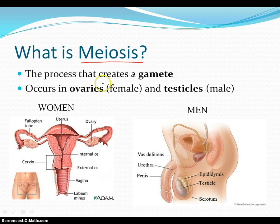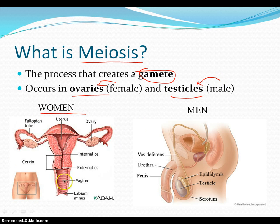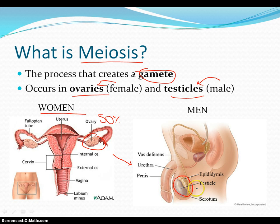So what is meiosis? Meiosis, simply put, is the process that creates a gamete. It occurs in ovaries if you're a female, or testicles if you're a male. Here I have a picture of a woman's reproductive parts, and this thing right here is an ovary — that is responsible for making eggs, which have 50% of the DNA of that woman. When they come in contact with cells produced in the testicle of a man — again, 50% of the DNA — they come together and we get a baby.